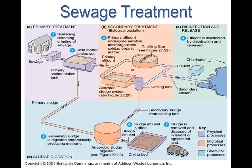The solid material from the secondary process meets the remaining solids from primary treatment. Under anaerobic conditions — without oxygen — the sewage is further digested by microorganisms that break down the sewage and convert that solid sewage into a fertilizer, which can be used for agricultural purposes or disposed of in a landfill.